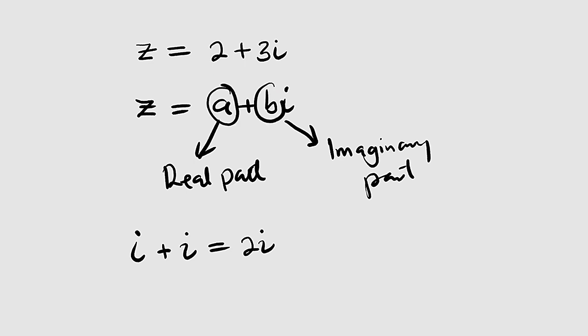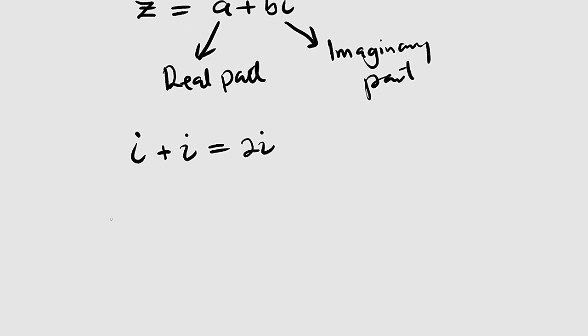If you want to be specific about these real numbers a and b, this is how you can identify them. The real part Re(z) is equal to a. That is, the real part of the complex number z is equal to a.